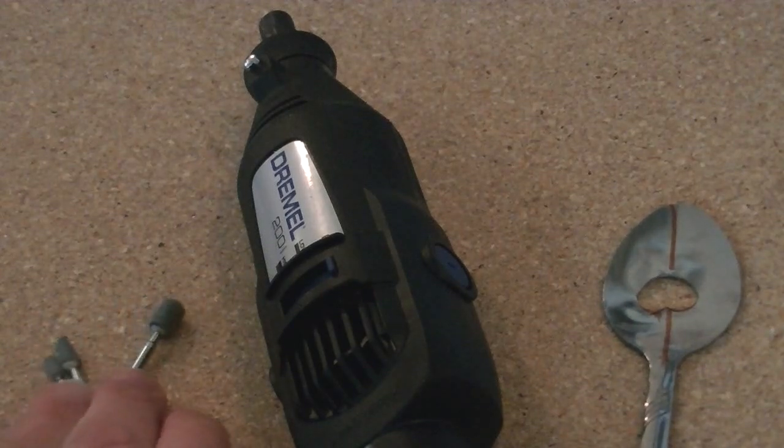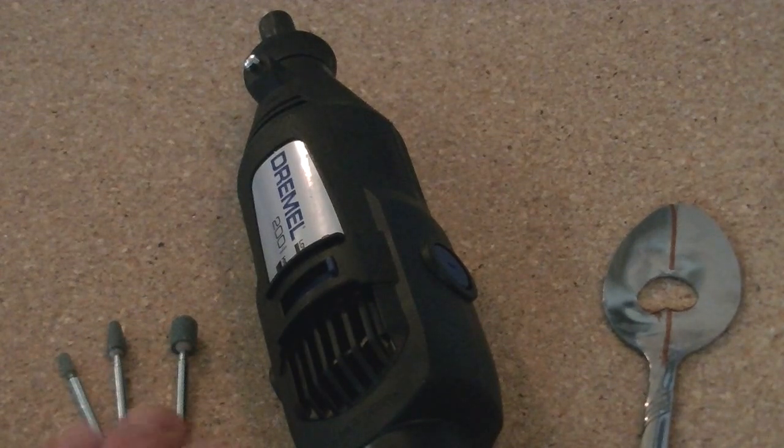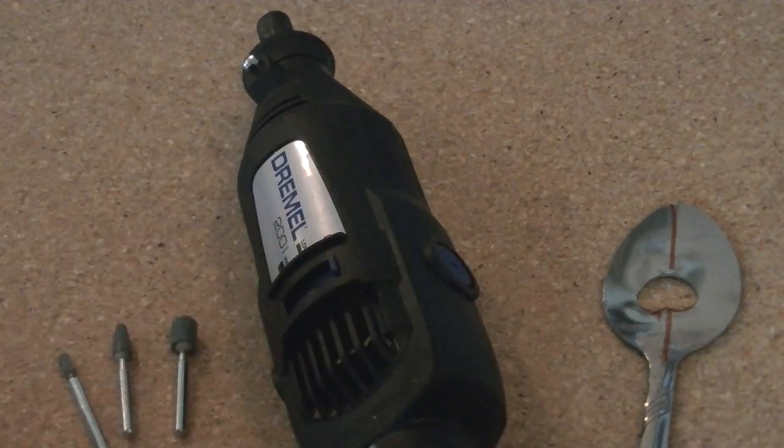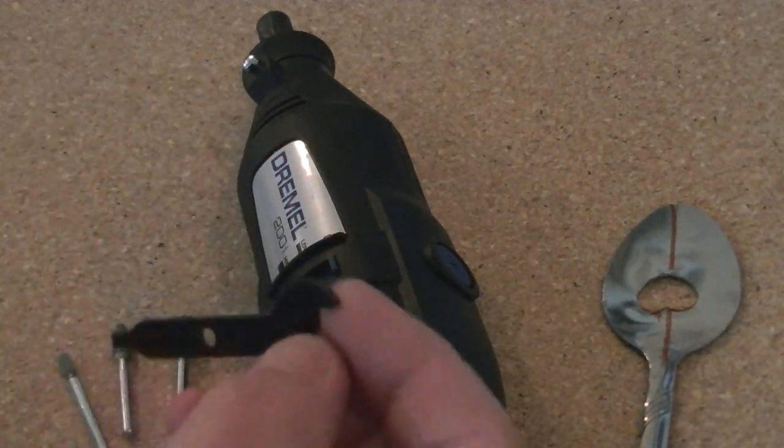Here's an example of what a grinding stone looks like. There's three different ones here. I'm going to use the center one today. And then of course you'll need your Dremel and your wrench for putting in your part.